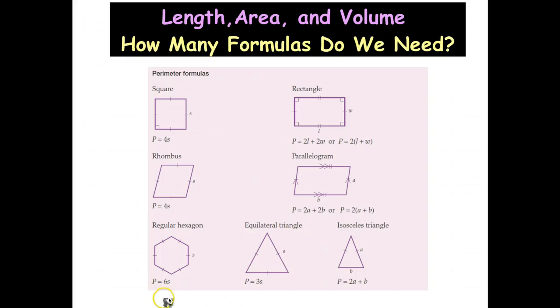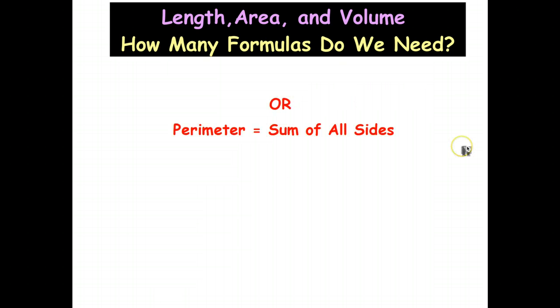Now, one textbook seems to think that we need at least six formulas for perimeter. What I teach my students is one formula, which is perimeter equals sum of all sides, and that seems to work just fine.